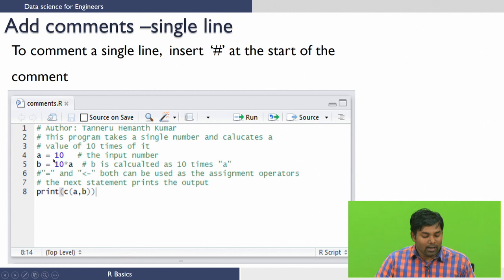You can see here I'm defining a variable a equals 10, which I'm commenting out as 'the input number'. Now I'm explaining this operation which is being performed here, which is b is calculated as 10 times a. If you remember from the previous lecture, we've used this symbol for assigning a value to a variable. We can also use equal to in R studio, as being demonstrated here. You can see how commenting makes your script file more readable.